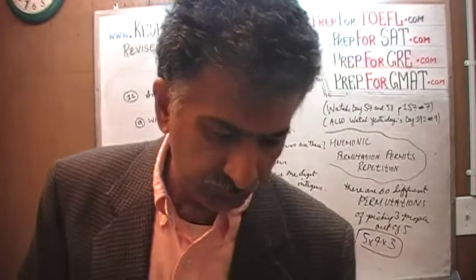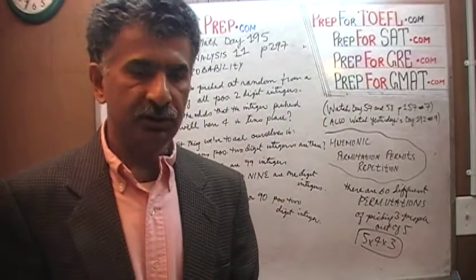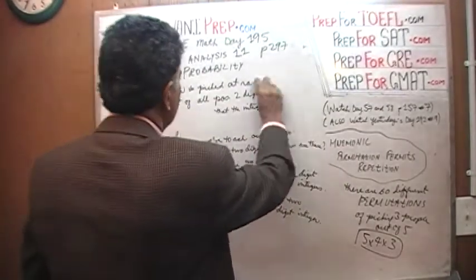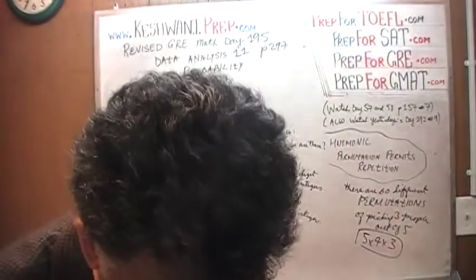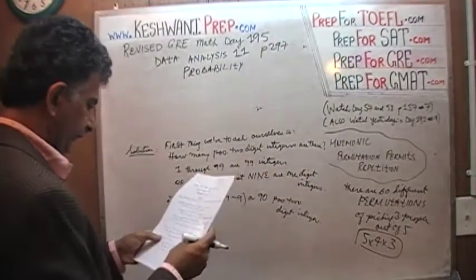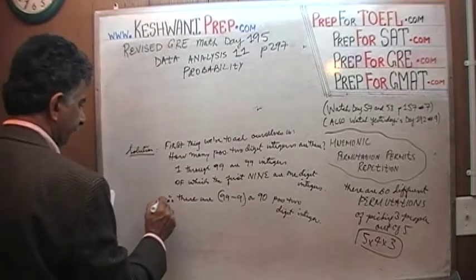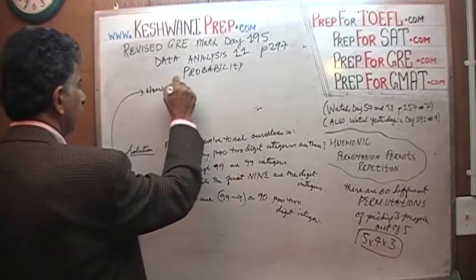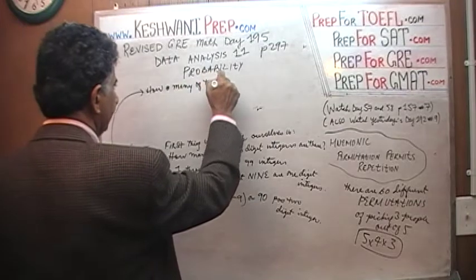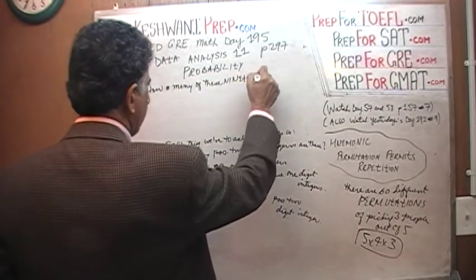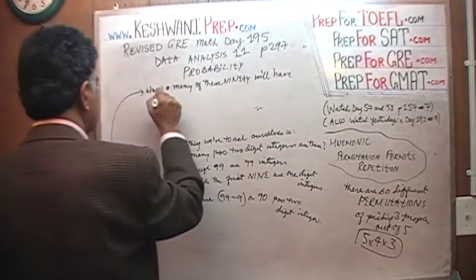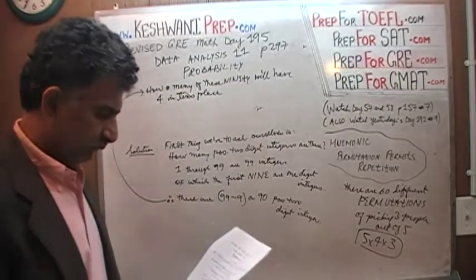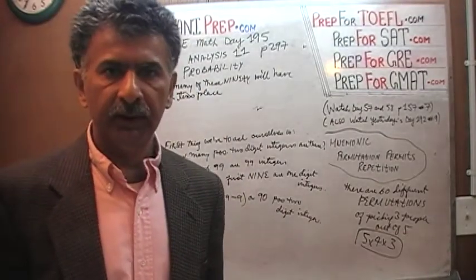The next question we have to ask ourselves is: out of those 90 positive two-digit integers, how many of them are going to have four in the tens place? The simplest thing — the easiest thing to do here — is just to enumerate them, make a list of them.